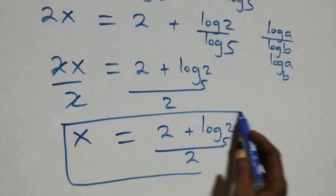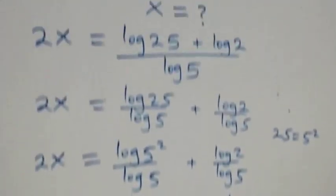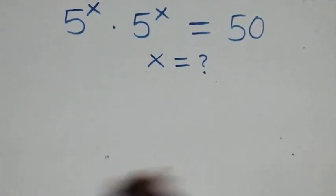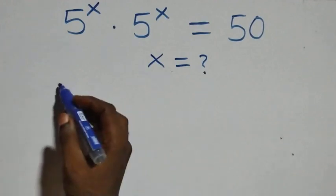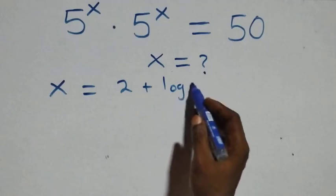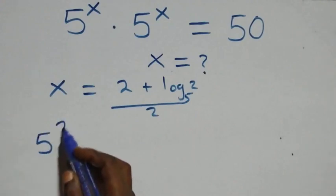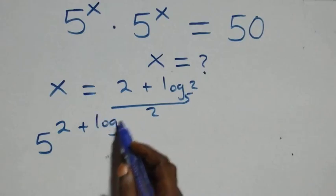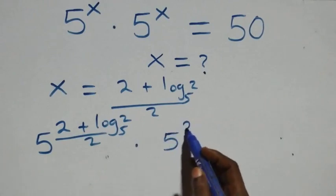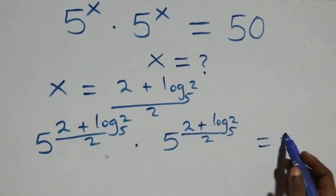So the value of x is (2 plus log₅2) all over 2. Now let's check by substituting this value of x back into the original equation: 5 raised to power x times 5 raised to power x, substituting x equals (2 plus log₅2) over 2, to verify it equals 50.